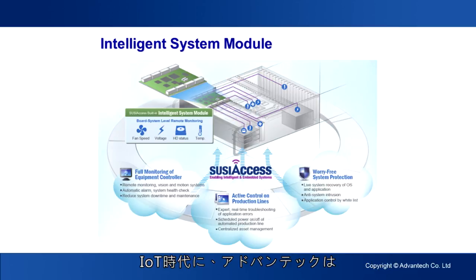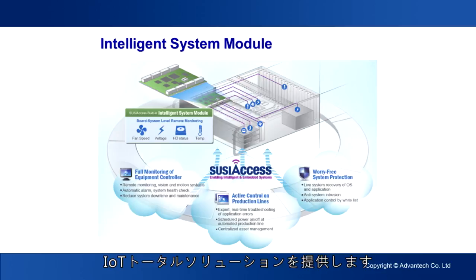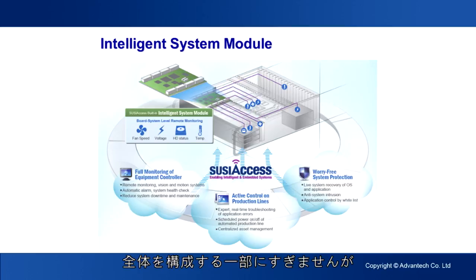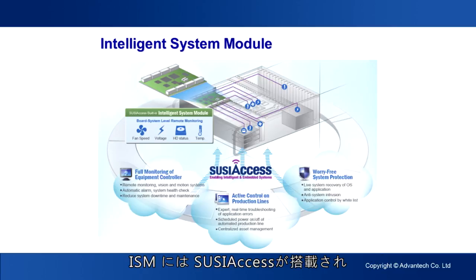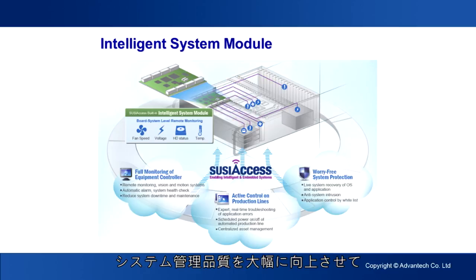In the IoT age, Advantech is a leader in intelligent systems and provides a total comprehensive IoT solution for partners. Solution features include intelligent processing and reliable transmission. ISM forms only a small part of an entire intelligent system, but it is the most critical one when it comes to connecting to the cloud and to the farthest outlying devices. This last-mile application complements SUSIAccess, which manages nodes along the network backbone, considerably boosting system management quality and helping solutions fulfill comprehensive and effective management.